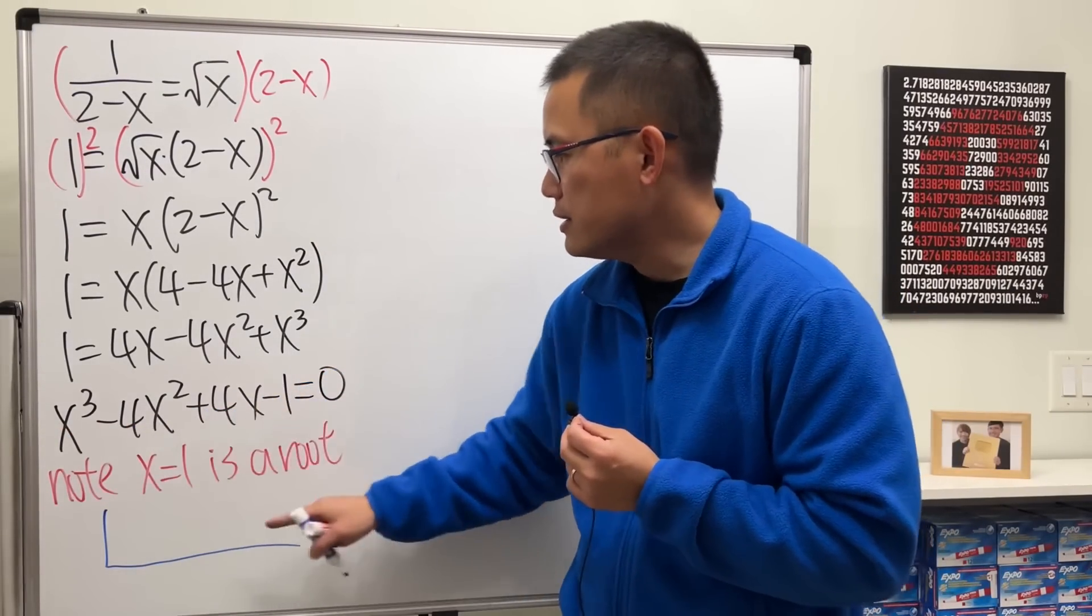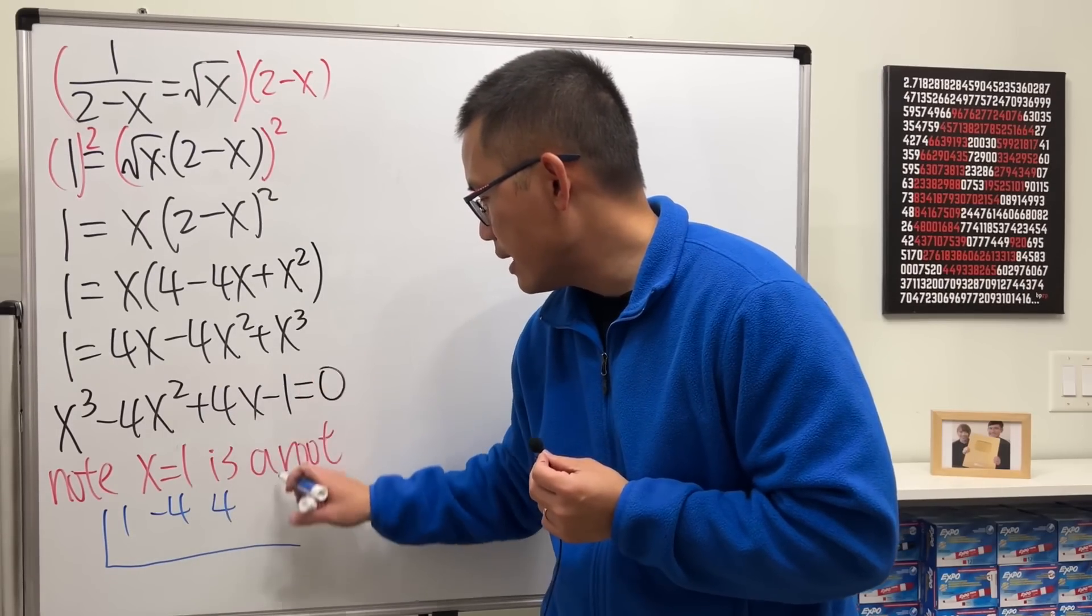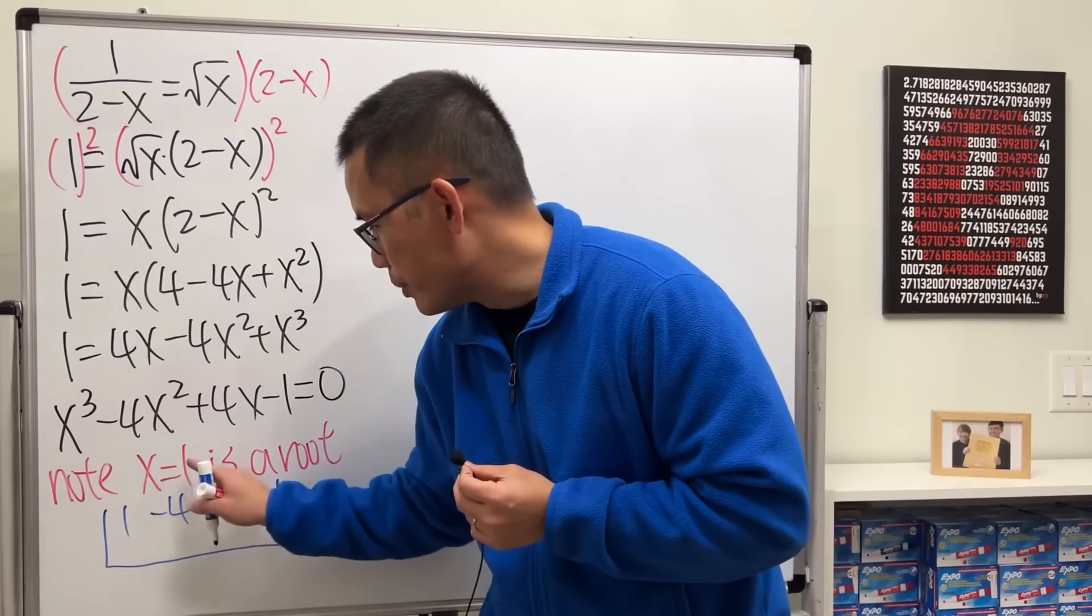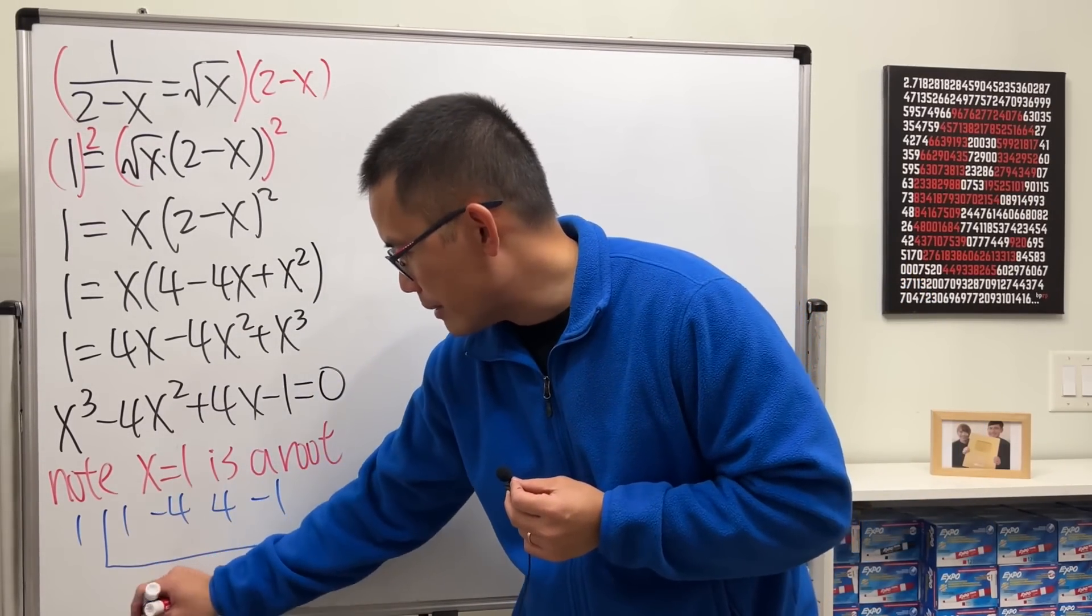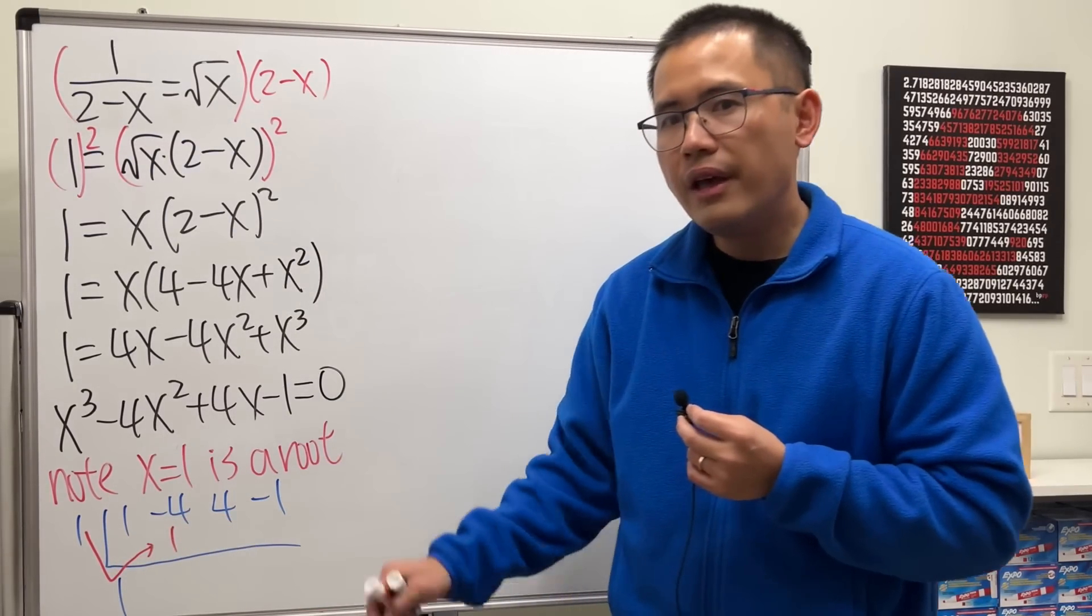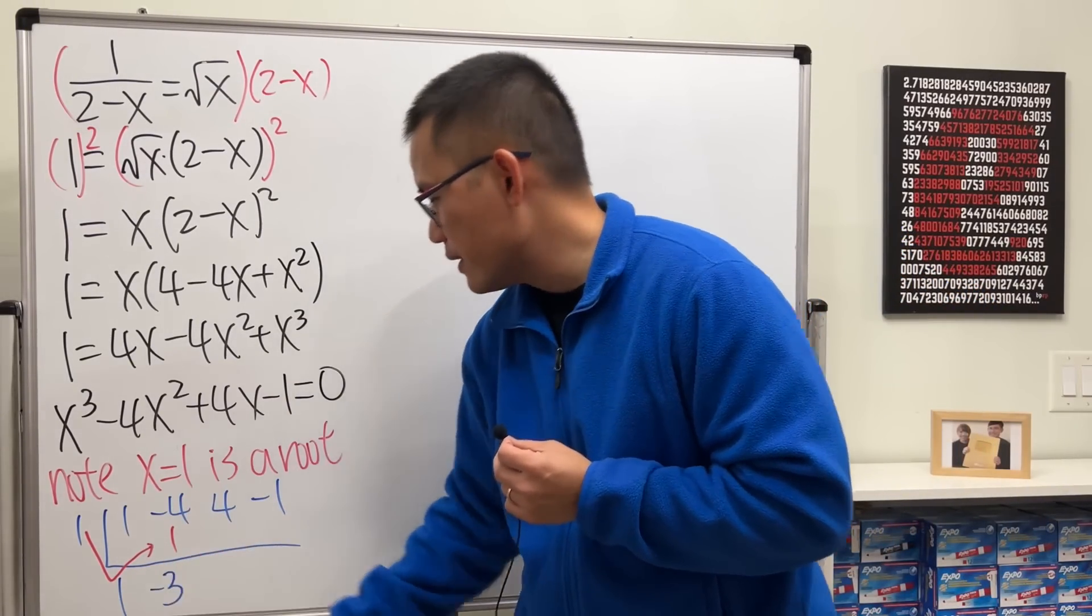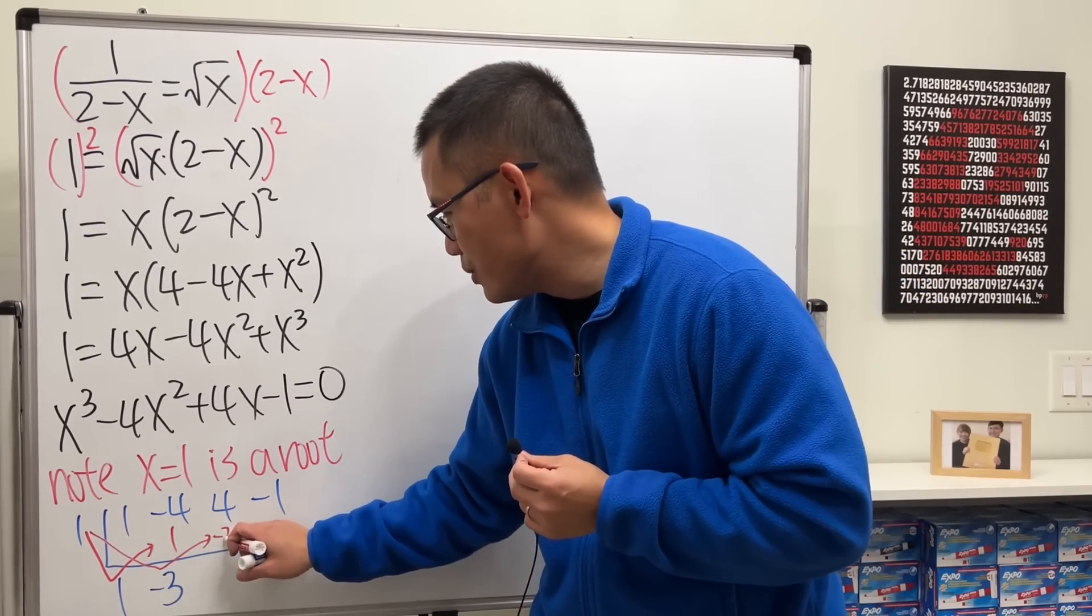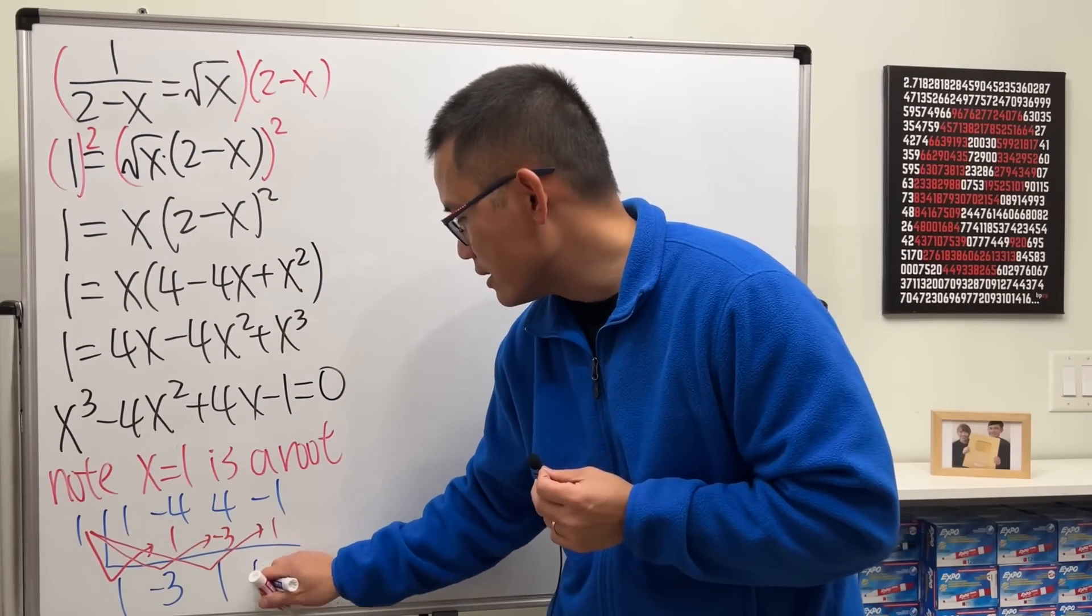I'm going to write down the coefficient. We have 1, negative 4, positive 4, and negative 1. And because x is equal to 1 is the solution, I will put a 1 right here. So first, you begin by putting down this number down here. And then you multiply this times that, which is 1, and then put it here. And for synthetic division, you add this and that, we get negative 3. And then repeat the process. This times this, this negative 3, add is 1. This times this, it's 1. Add, we get 0.